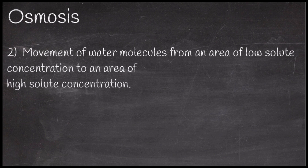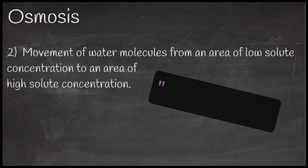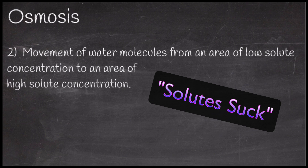These two definitions are really just the other side of the same coin. If there is a region of low solute concentration, then in that specific region there will be a high molecular water concentration. And the area that has high solute concentration, by corollary, is going to have a low molecular water concentration. This is why sometimes when people are talking about osmosis, they use the term 'solute sucks,' because water is going to be drawn to the area of higher solute concentration.